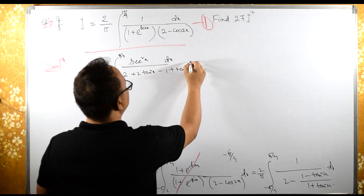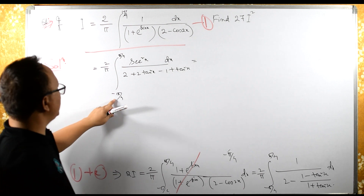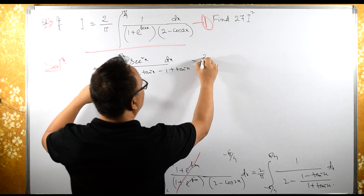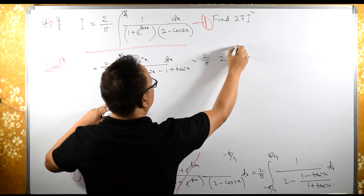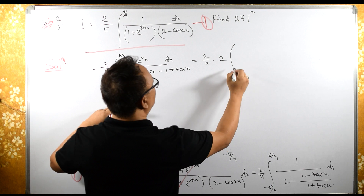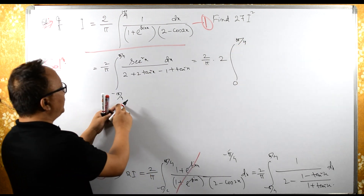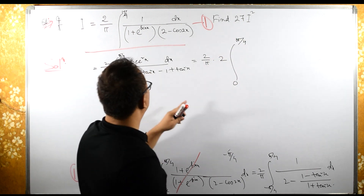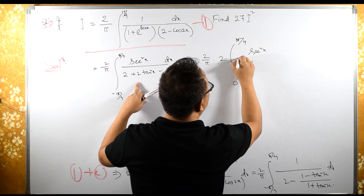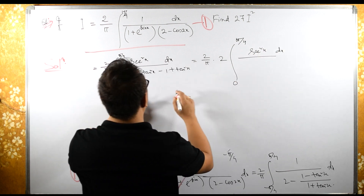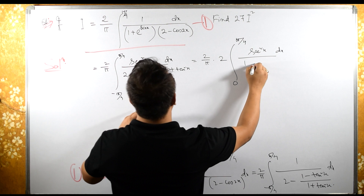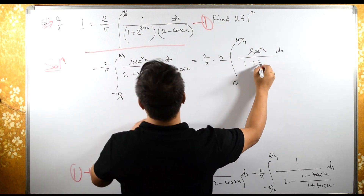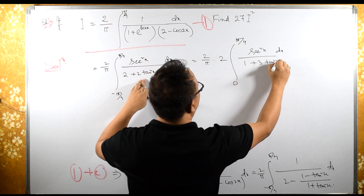So we have 2 by pi from minus pi by 4 to pi by 4. Since the integrand is an even function, we can change the limits. So this becomes 2 by pi times twice the integral from 0 to pi by 4. Simplifying: 2 minus 1 is 1 and 2 plus 1 is 3, giving us sec squared x dx over 1 plus 3 tan squared x.